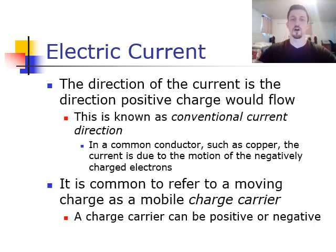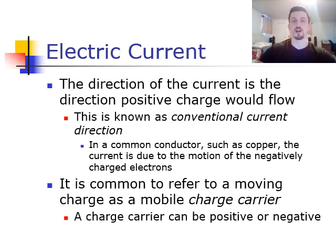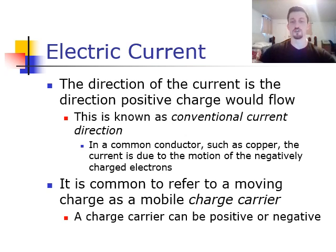When we talk about current, we call the direction of current the direction positive charge would flow. This is what we call conventional current direction — that would be from the positive terminal to the negative terminal. But it's important to remember that in a common conductor, such as copper, the current is actually due to the motion of electrons. So the flow of electrons is going to be in the opposite direction of the current in a circuit. Conventional current is from positive to negative; the flow of electrons is going to be from negative to positive. Positive charge carriers would be protons; negative charge carriers would be electrons. It's really important to remember these two directions.